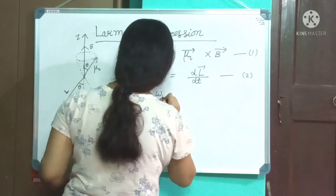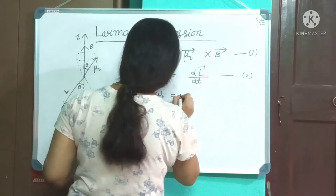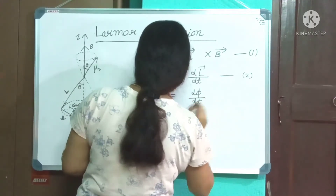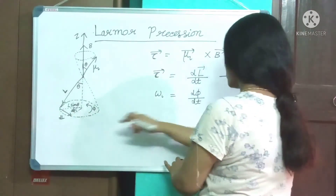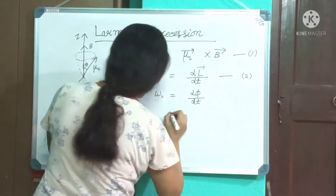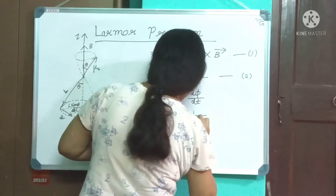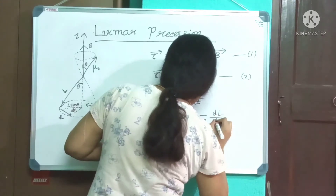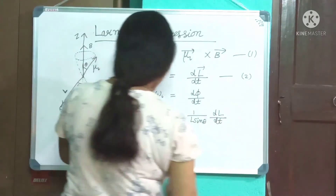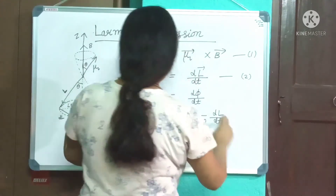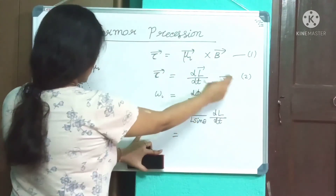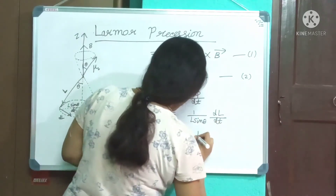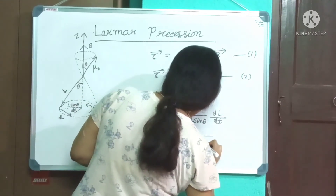From the diagram, if ω_L is the Larmor frequency, then ω_L equals dφ/dt, which equals (1/L sinθ) × dL/dt. Substituting dL/dt equals τ, we get ω_L equals τ divided by L sinθ.